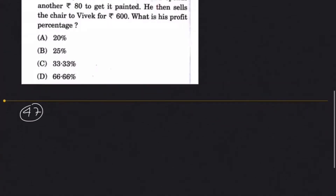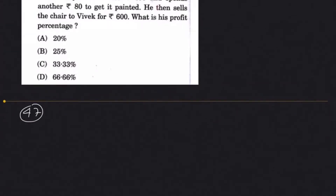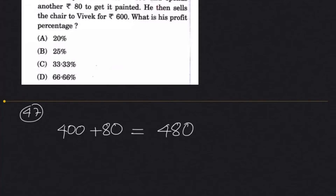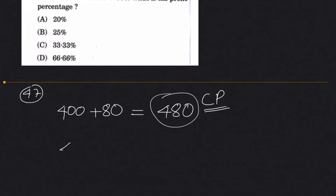Question 47: Suman pays for a chair for 400 rupees and spends another 80 rupees to get it painted. So the total cost price is 480 rupees. He then sells the chair to Vivek for 600 rupees — that's 480 cost price to 600 selling price. What is his profit percentage? So 480 is the cost price.